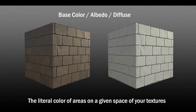Here on the left you can see our fully textured cube that we had from the start. On the right side you can see the cube without its Base Color — a very noticeable difference. You want color in your objects; it makes a very large change if you remove it. So it's an essential map.